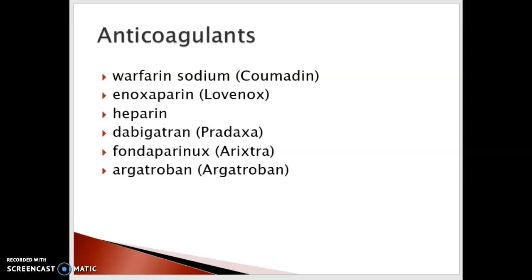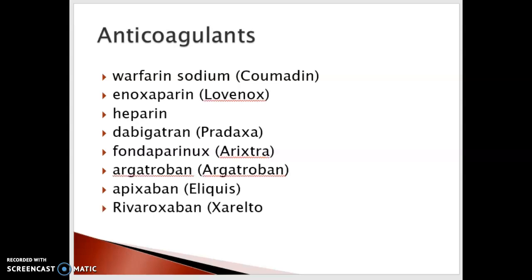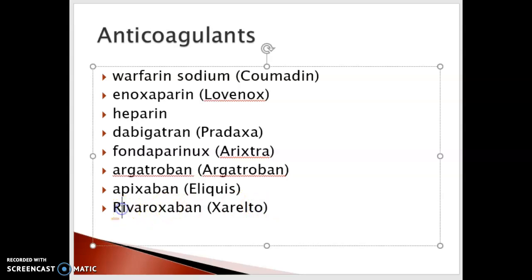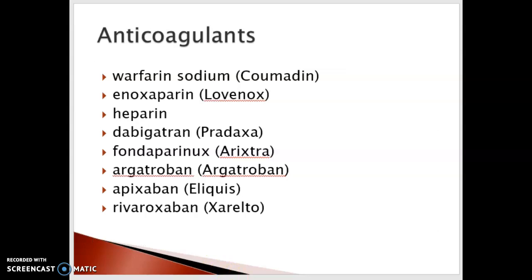I'd like for you to compare and contrast the half-life, onset, and peak times of these anticoagulants — heparin, enoxaparin (Lovenox), and warfarin. I would also encourage you to add apixaban (Eliquis) and rivaroxaban (Xarelto) to your list. These two medications are the ones you're going to see more and more frequently, so compare and contrast them and see if you can figure out why we are seeing more of the Eliquis or Xarelto being ordered as opposed to Coumadin or Lovenox.